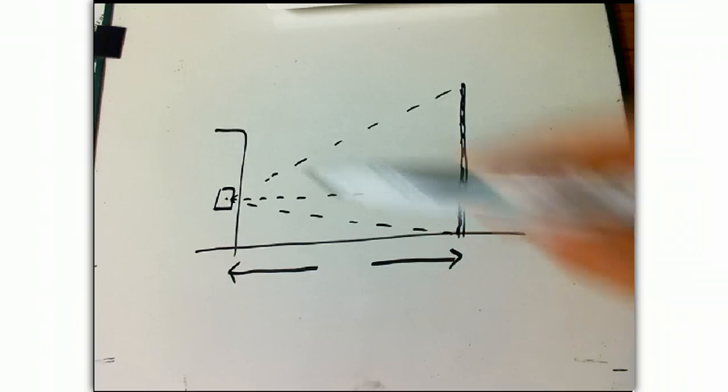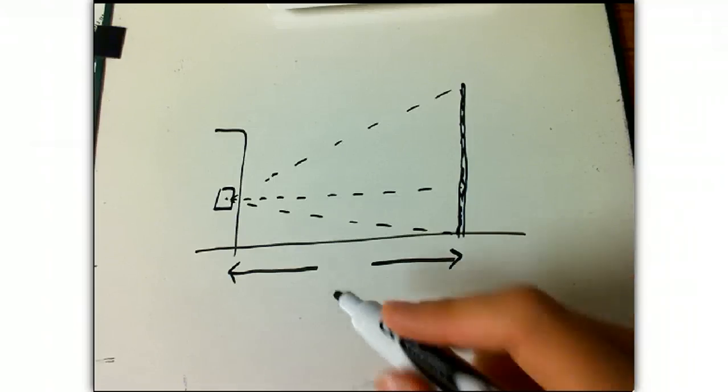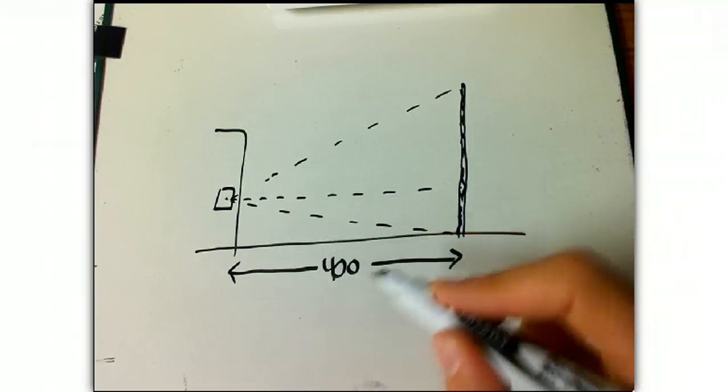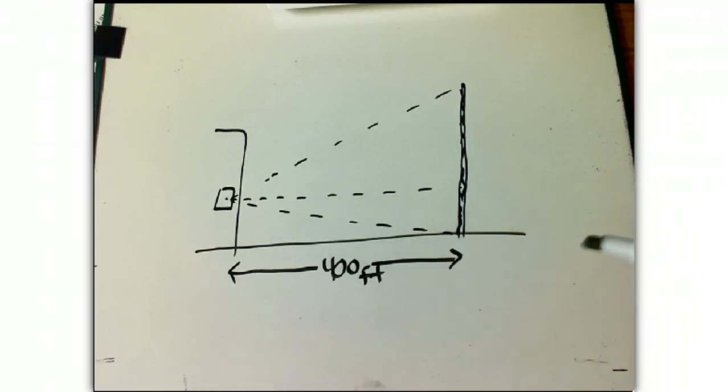We are in a building looking out of a window at a tower, and we know we are 400 feet away from the tower, horizontal distance.